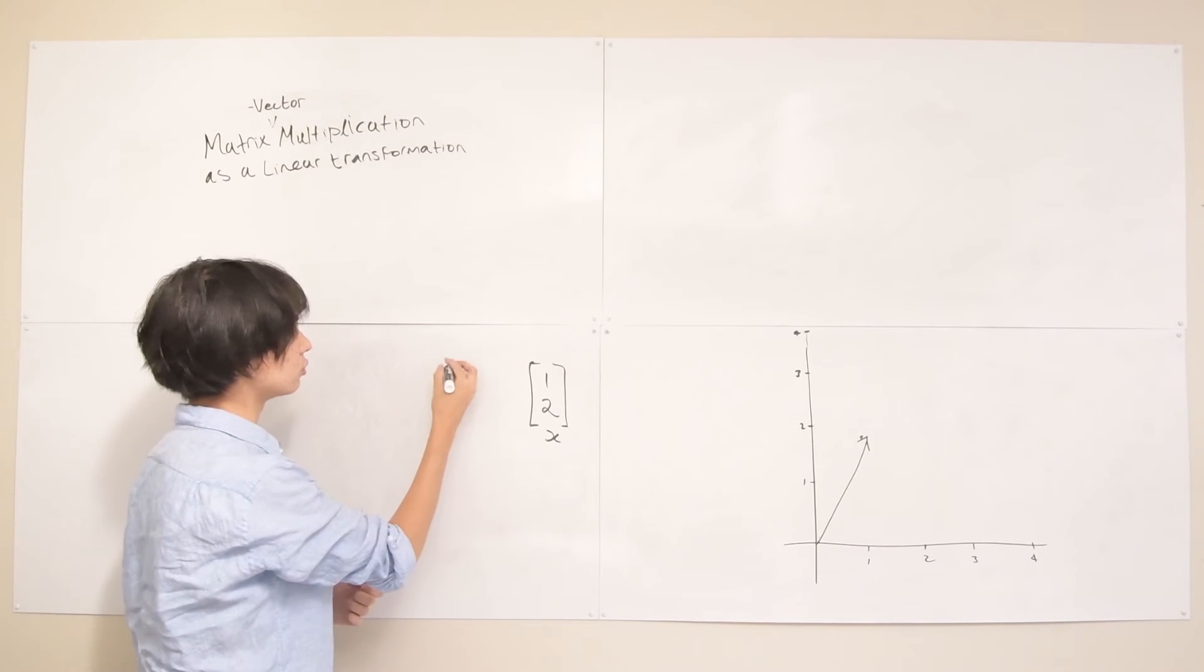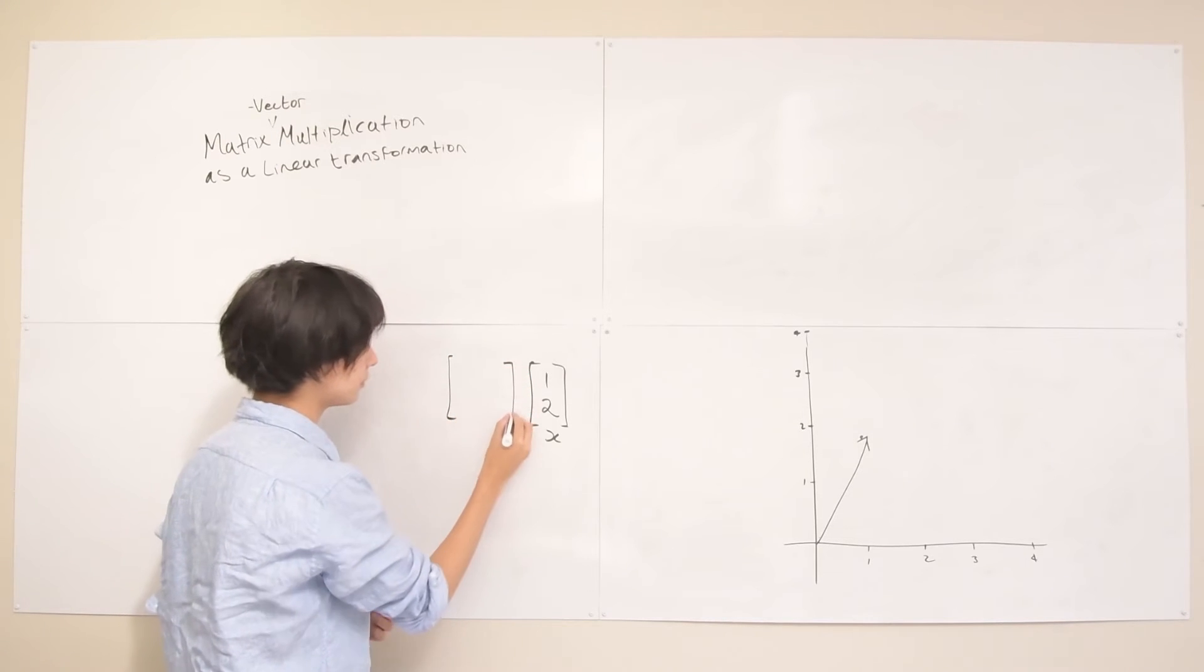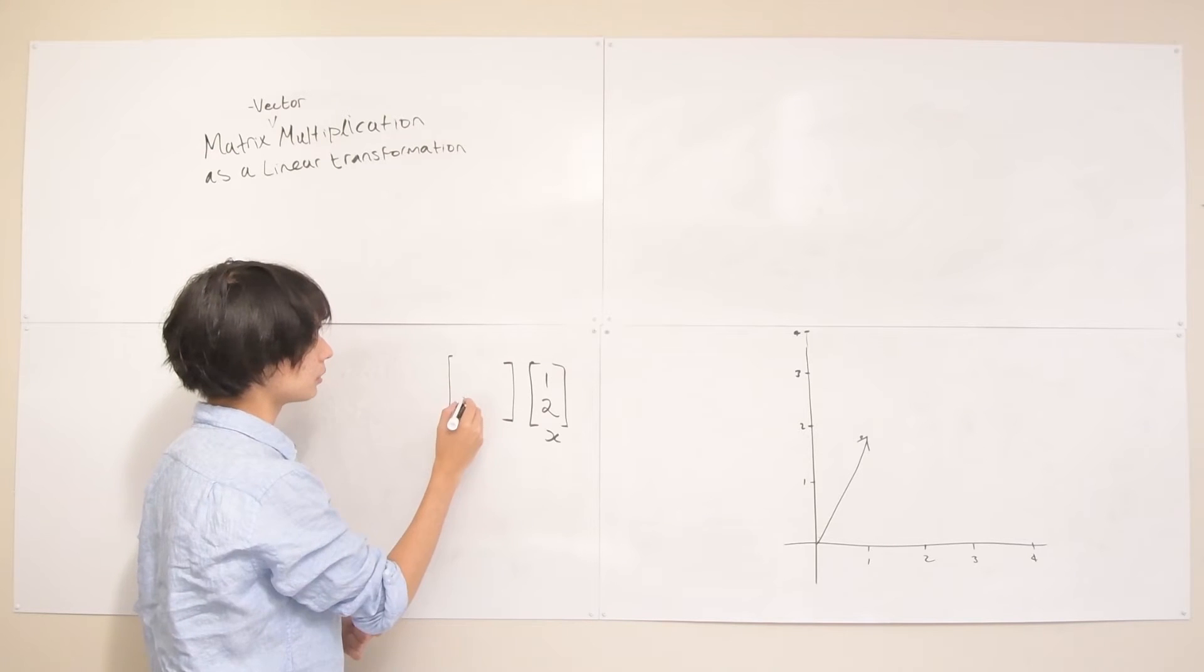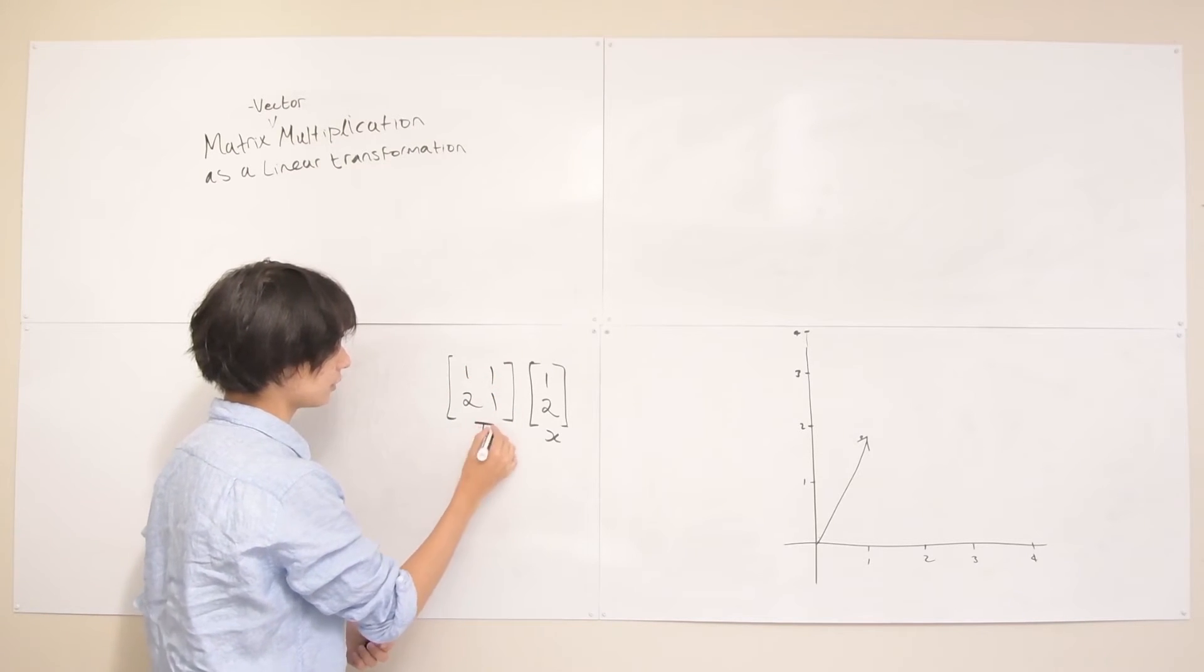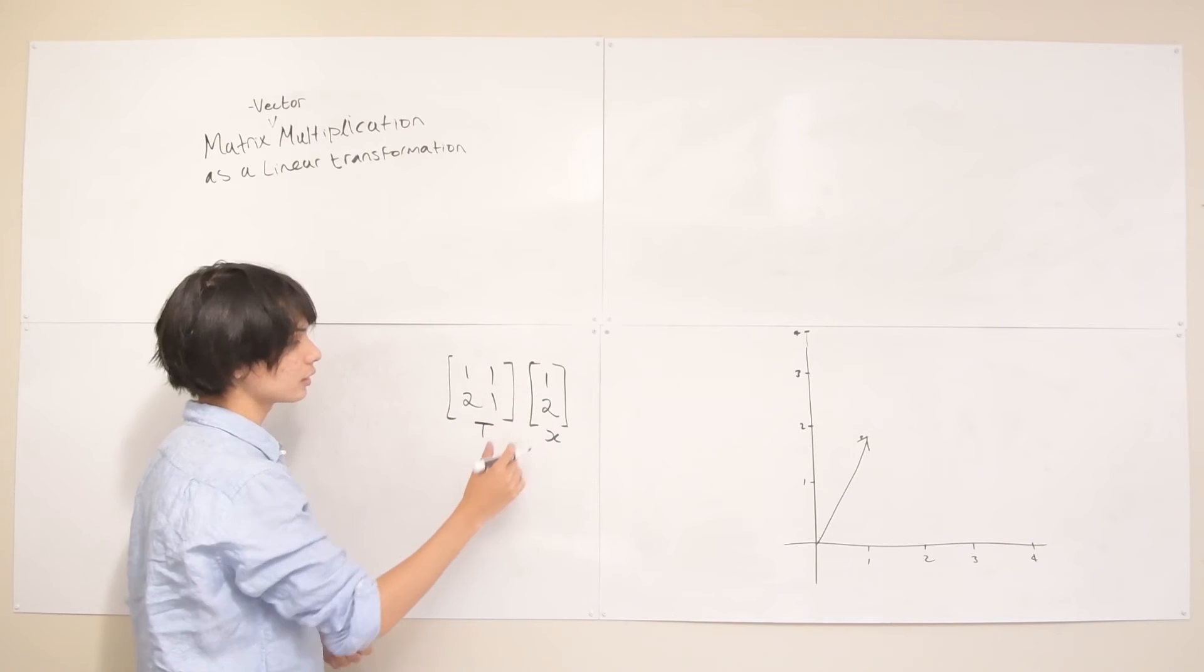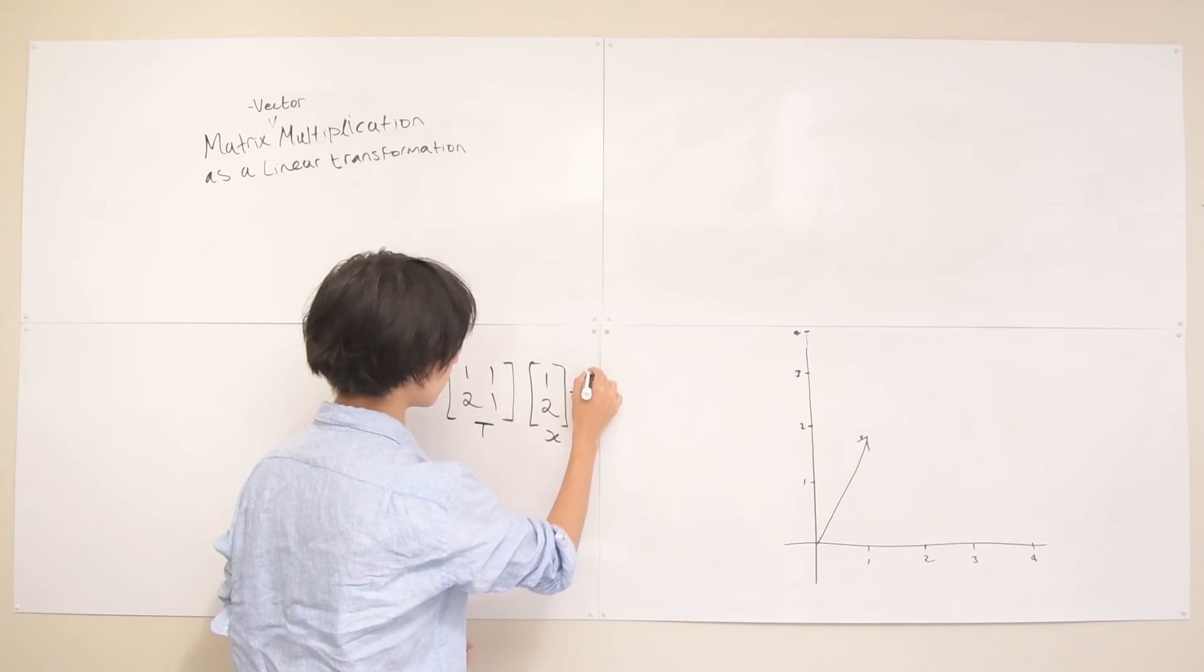That's just going to be any old 2x2 matrix. So let's say that's going to be [[1, 1], [2, 1]] and let's call this T.